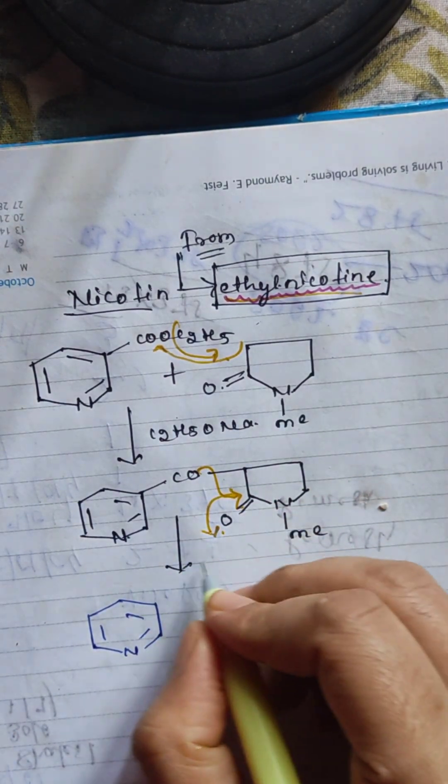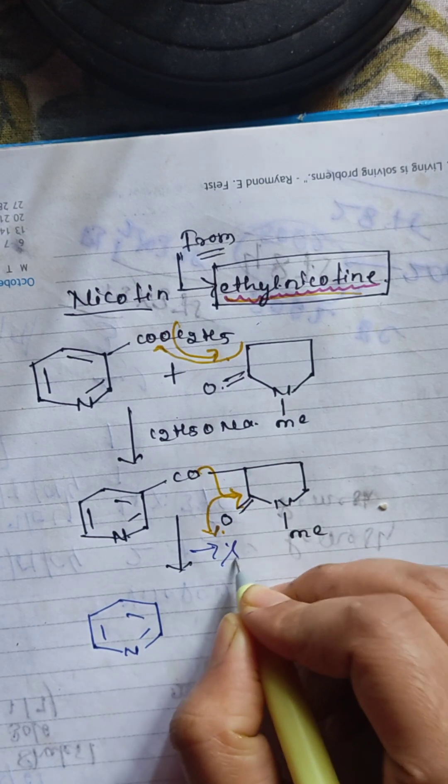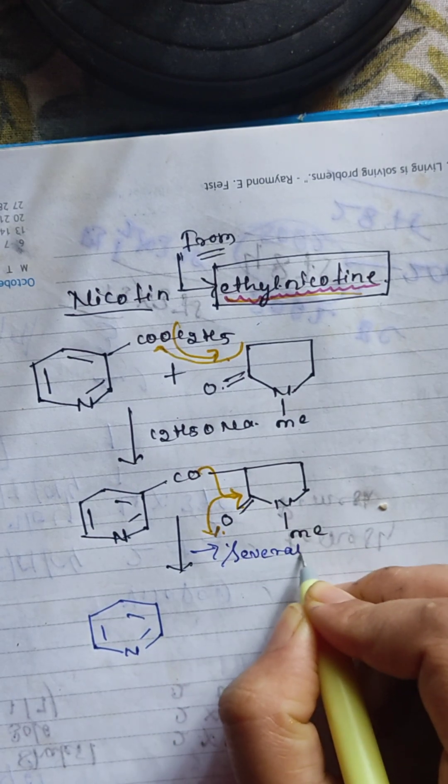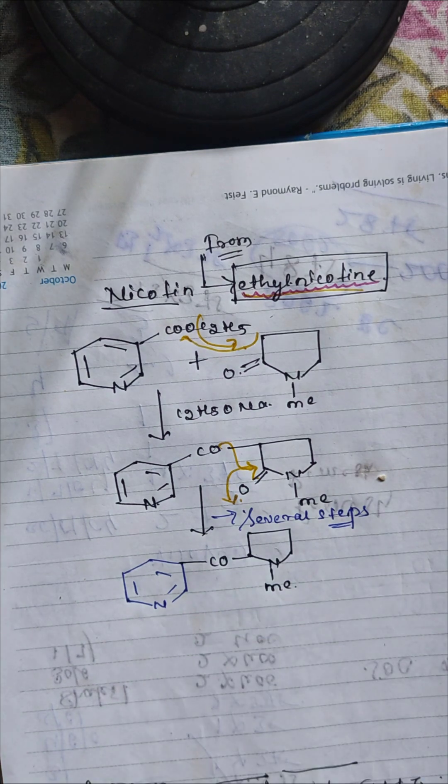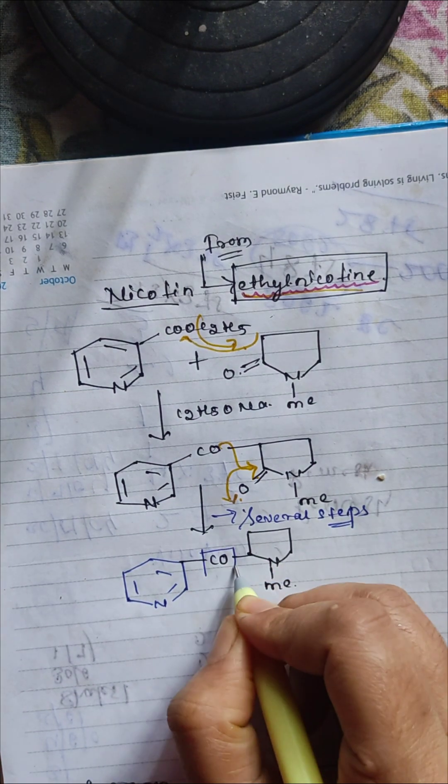Short trick to remember the nicotine structure: it's a six-member ring and five-member ring. Each group is attached with the N position. The connection between these two rings is the CO bond.